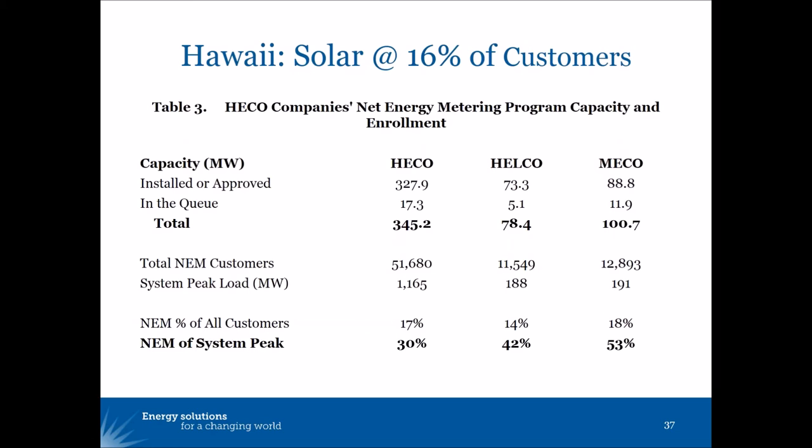Half of owner-occupied single-family homes have solar where people have access to credit or can sign a long-term contract. The net metering customers on HECO in Honolulu represent about 30% of system peak demand. On Maui, the net metering installed solar equals about 53% of the total peak demand for the utility. We don't expect to see that in California for many years and in other parts of the West, but it is a postcard from the future.